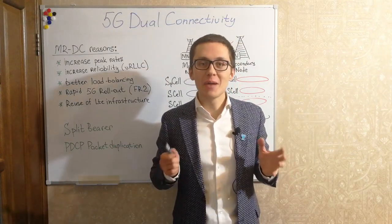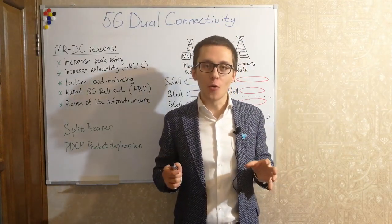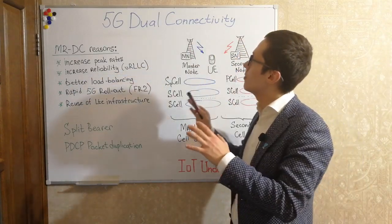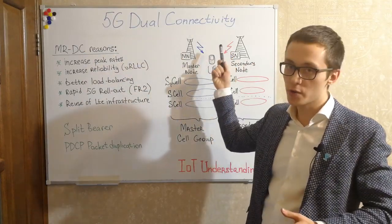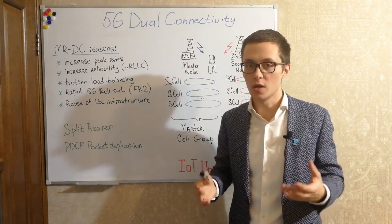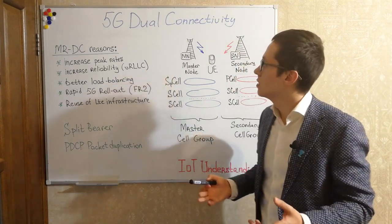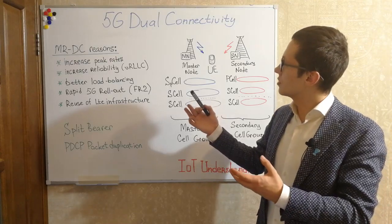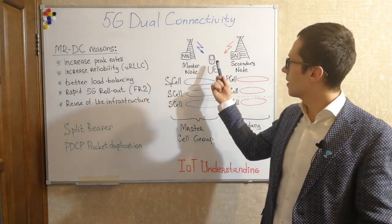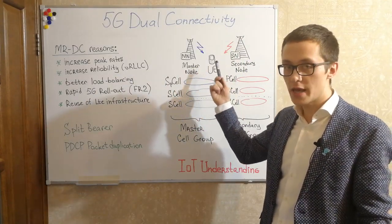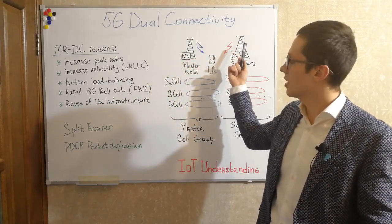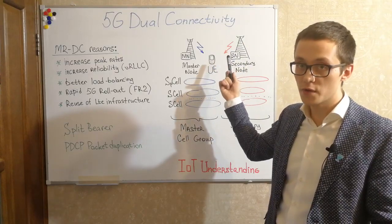Hello everybody, I'm Gleb and this is my 5G course on the IOT Understanding channel. Today we're going to learn about 5G dual connectivity mode, or as we can call it, multi-radio dual connectivity in 5G. This connection is basically about when the user equipment may have a simultaneous connection in connected mode with LTE and with NR, for example.